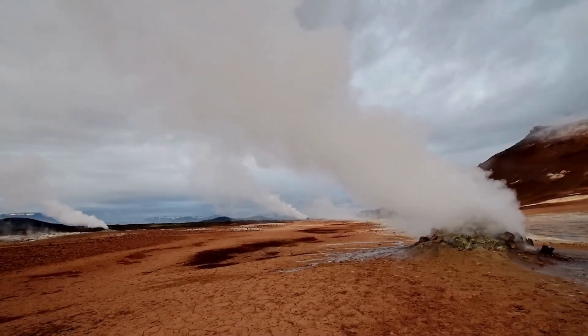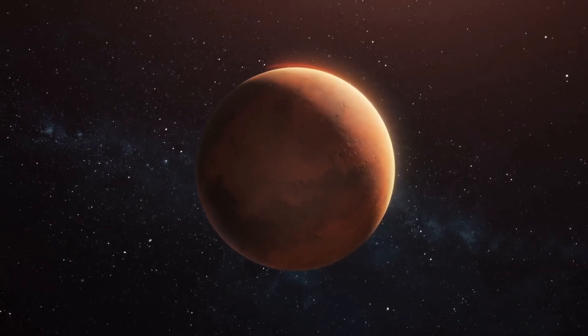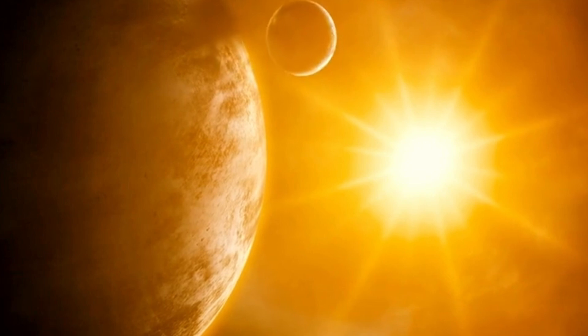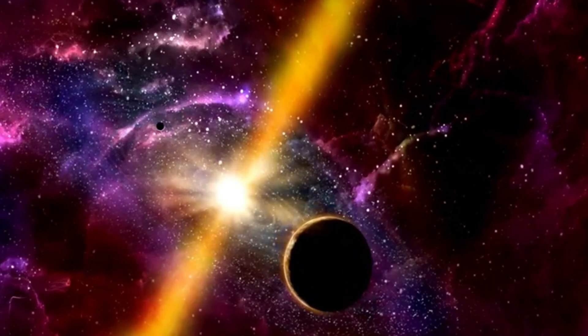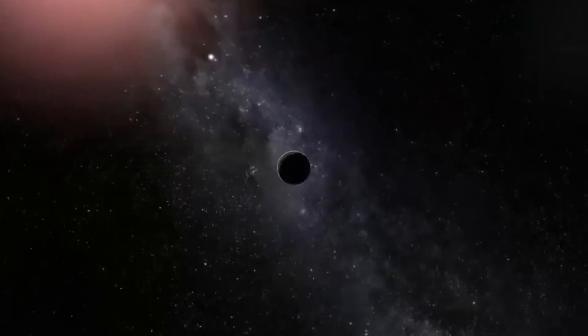Proxima b, the nearest exoplanet to Earth, is in the habitable zone of our nearest neighbor, the small star Proxima Centauri, about 4.5 light-years away. Since the exoplanet is much closer to its star than Earth is to the Sun, Proxima b is expected to be tidally locked, with a permanent day-side and night-side like our Moon.